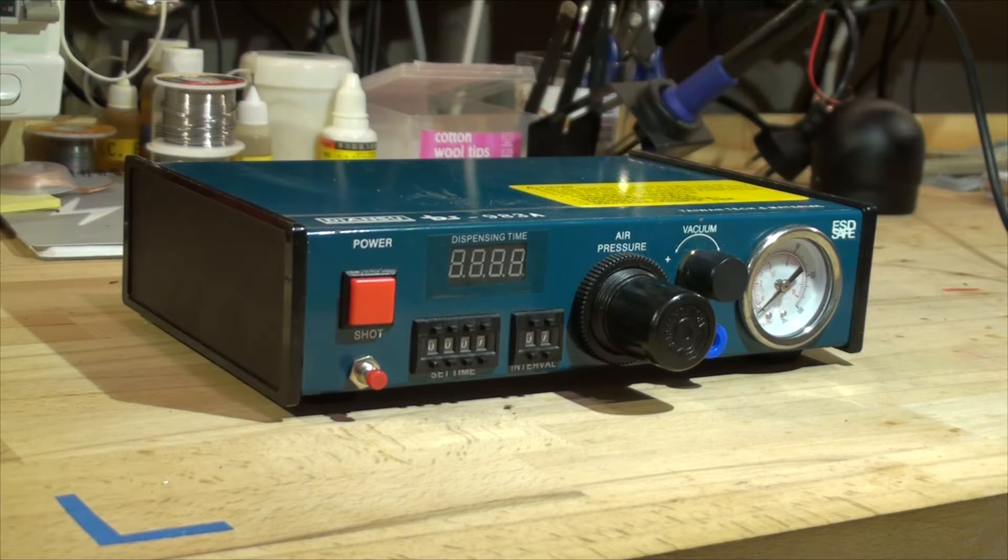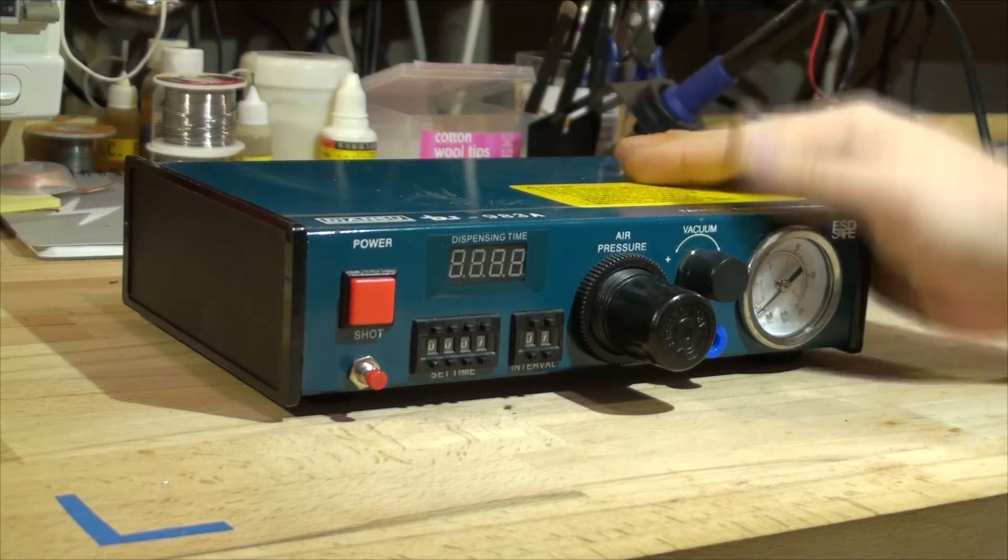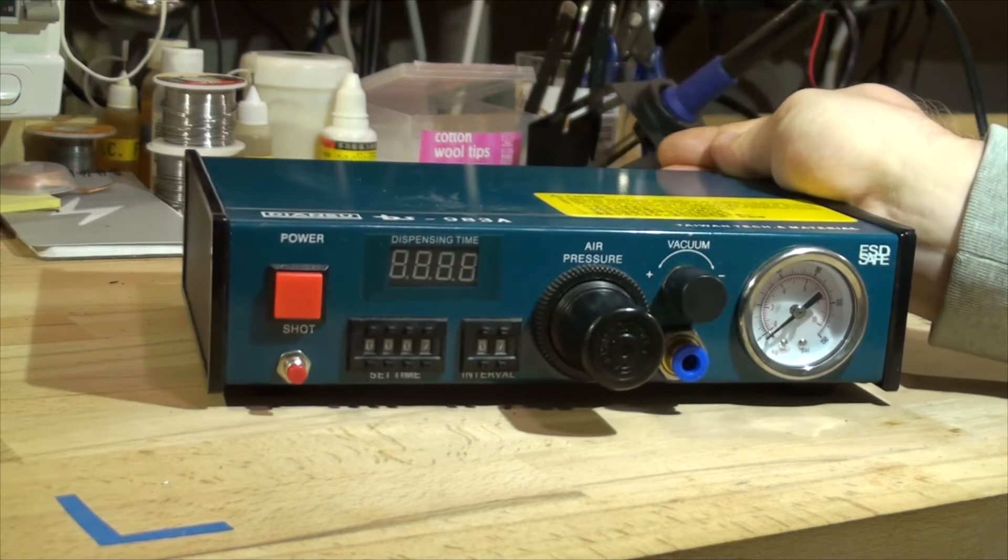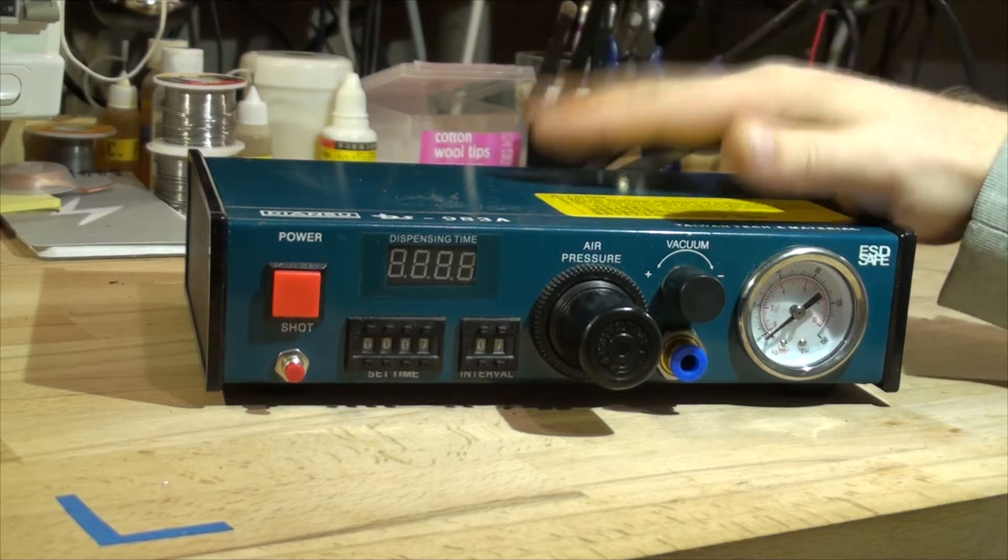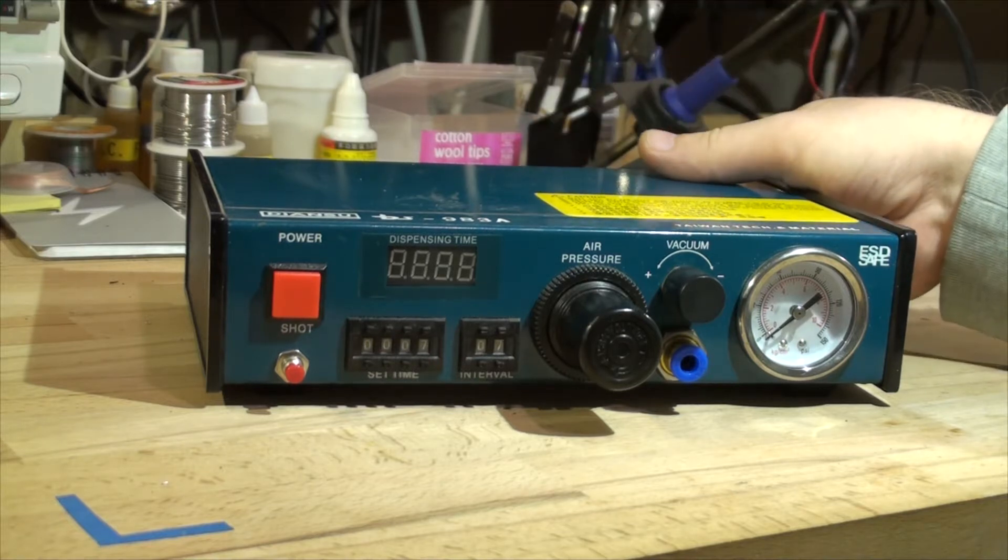It's a dispenser, so usually you can use this with a CNC for dispensing glue or dispensing solder paste or you can use it manually. So this is the device itself. I've got it from eBay for around $150 Australian dollars.